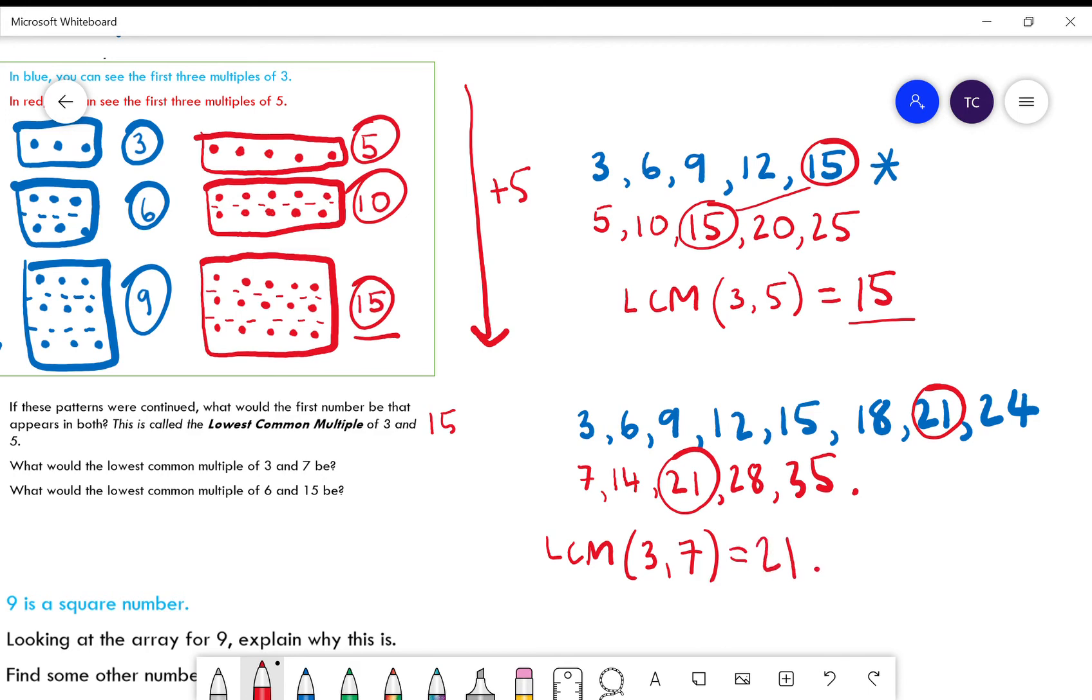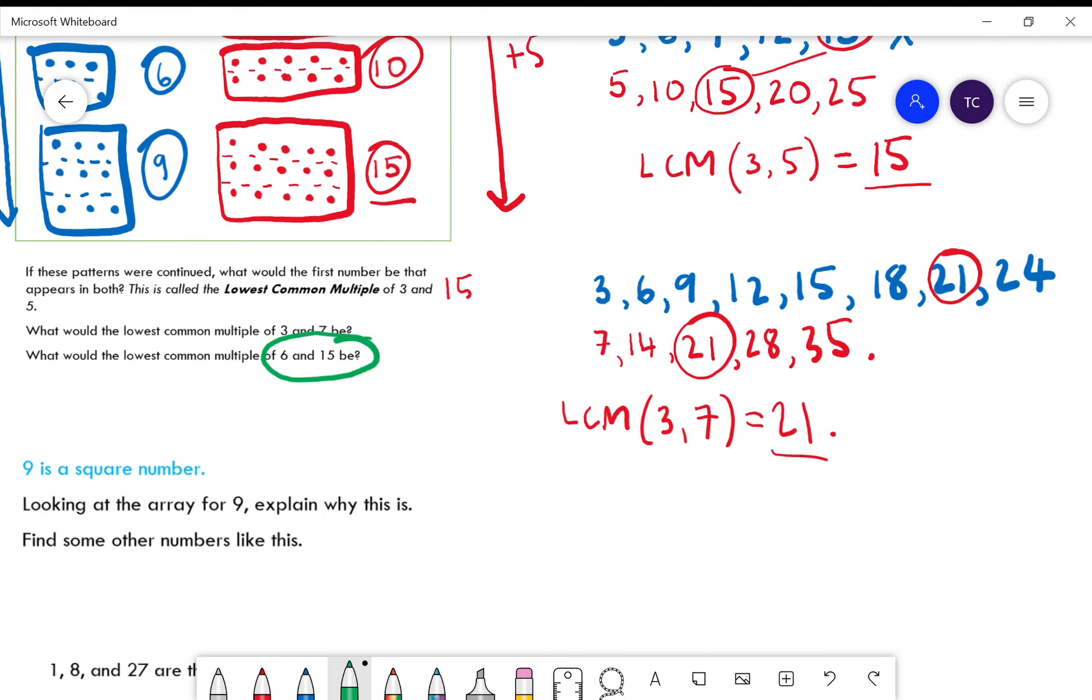I could keep going, but I'm going to stop there. So the lowest common multiple of 3 and 7 is equal to 21. Okay, and then the next one I've asked you to do is 6 and 15.